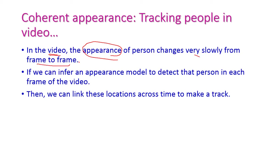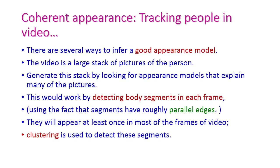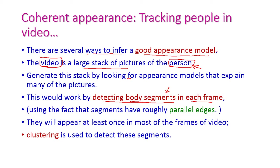In a video, the appearance of a person changes very slowly frame to frame, so from each frame we can easily identify a particular person's appearance using the appearance model. The appearance model detects the person in each frame of the video, and we link the locations of a person's body parts across time to make a track. There are several ways to generate a good appearance model — the video is a large stack of pictures of the person, and from each frame we extract their appearance by detecting body segments.